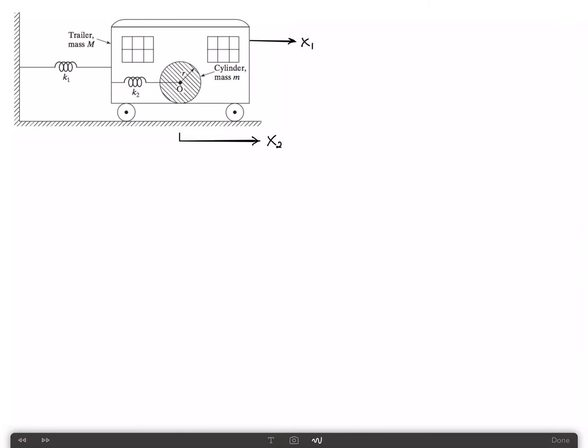The cylinder rolls without slipping, known as the no-slip condition. I've chosen the coordinates for this to be x1, which is the displacement of the cart, and x2, which is the total displacement of the cylinder—meaning the displacement of the cart plus the displacement of the cylinder relative to the cart.